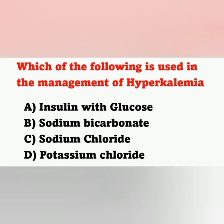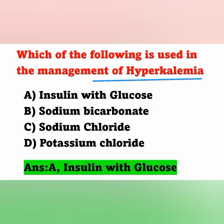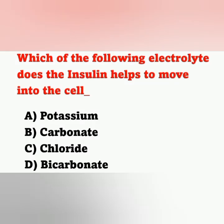Question 10: Which of the following is used in the management of hyperkalemia? Options: A) insulin with glucose, B) sodium bicarbonate, C) sodium chloride, D) potassium chloride. The correct answer is option A. Hyperkalemia means increased serum potassium above 5.1 mEq/L. Hypertonic glucose with insulin helps move excess potassium from extracellular space to intracellular space, thereby decreasing potassium in the blood.